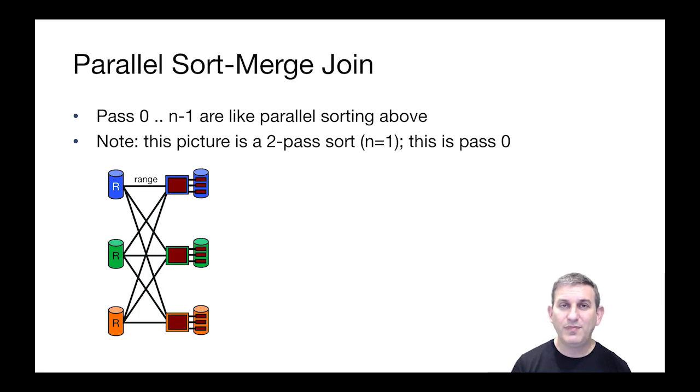Now, having looked a bit at how to pick a partitioning key for sorting, let's look at parallel sort merge join. Passes zero through n minus one are very much like the parallel sorting we saw before, where in this picture, this is going to be a two pass picture, it'll look sort of as follows.